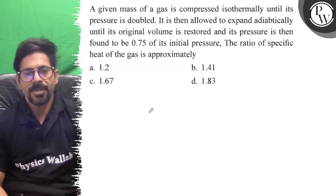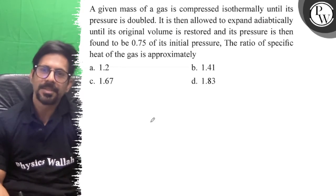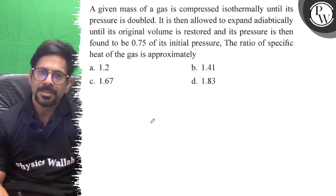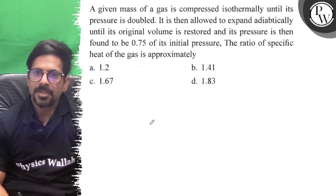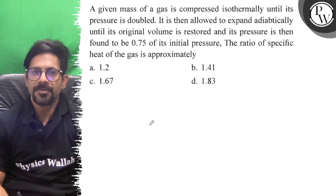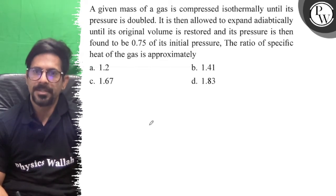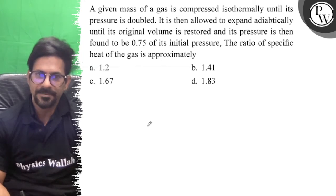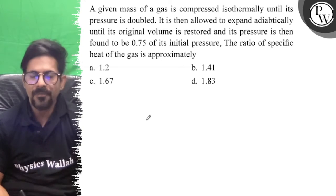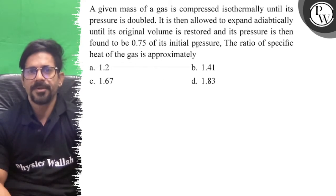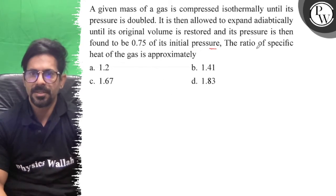Hello everyone, it's education. A given mass of gas is compressed isothermally until its pressure is doubled. It is then allowed to expand adiabatically until its original volume is restored, and its pressure is then found to be 0.75 of the initial pressure.